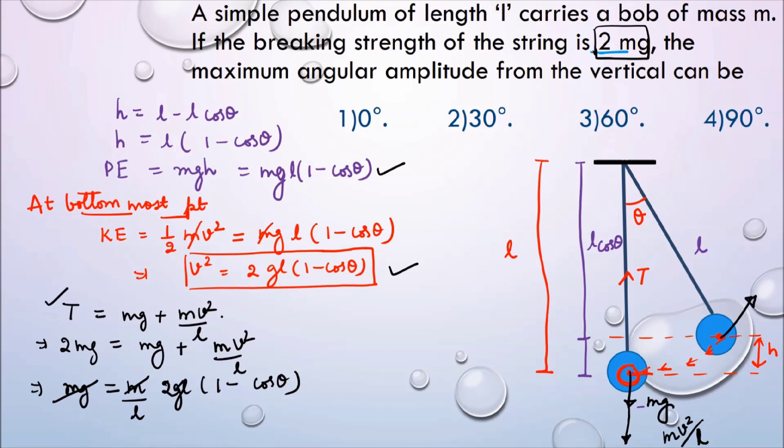Here mg and mg can be cancelled. Then we are left with also L and L is cancelled. So we are left with 1 is equal to 2(1 minus cos θ). So in order to solve it, I will make little bit space. So I am going to rub on the top. You can pause the video any time if you are noting it and can continue later.